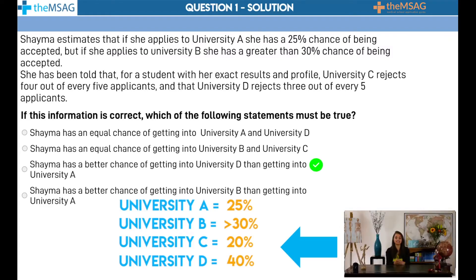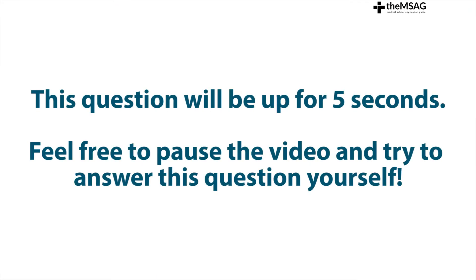Occasionally, if the UCAT is being harsh, they may give you probabilities other than the values listed above. If they do, these can be swiftly converted to a more familiar format. As always, have a go on your own first, and then we'll go through it together.